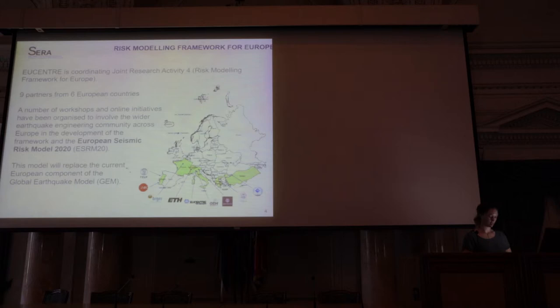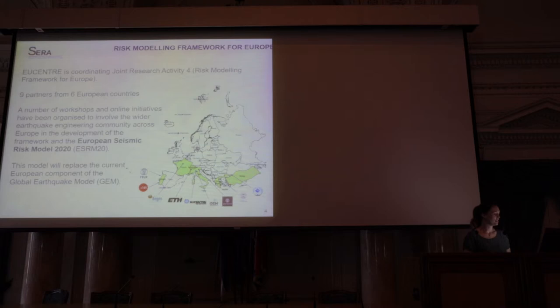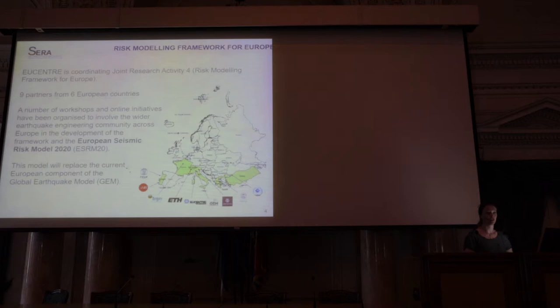As I mentioned already, EU Centre is coordinating the effort to develop a European seismic risk model. These are the partners that are involved officially within that work package — nine partners from six different European countries. As it's quite evident from this map, there are a lot of countries missing from Europe in the development of this model. So what we are trying to do is organise workshops, online initiatives, questionnaires, and email exchanges to bring more of the earthquake engineering and structural engineering community into the project for the development of this European seismic risk model, which we will release in April 2020.